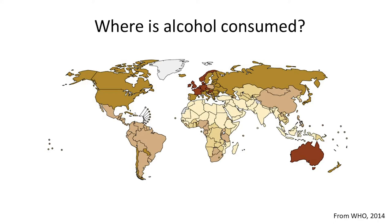This is a map of alcohol consumption around the world. Darker countries are ones where a greater proportion of people consume alcohol; lighter countries are where fewer people consume alcohol. If you look at Australia, this is a country where maybe 90% of people consume alcohol, but nearby — a short flight away — is Indonesia, where most people do not consume alcohol. So there are huge differences around the world in terms of who consumes alcohol, who consumes alcohol to excess, and who is at risk for developing alcohol-related problems.